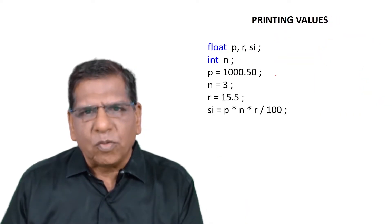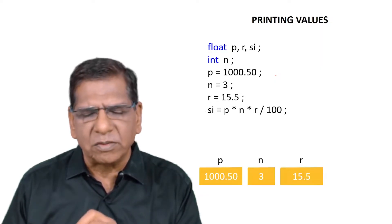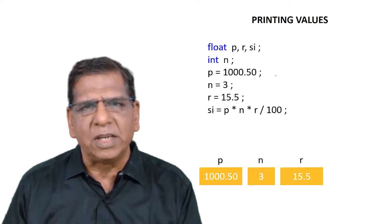Let's see what has happened in memory because of our program. For P, N, and R three locations must have been chosen. Values 1000.5, 3 and 15.5 must have been stored in them and the names P, N, and R must have been given to them. That's what has happened in memory.